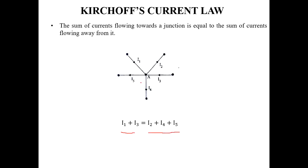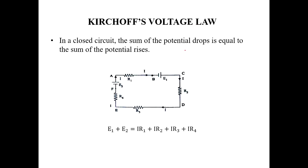Kirchhoff's Voltage Law (KVL): the sum of potential drops equals the sum of potential rises. Potential rises are the supply voltages E1 and E2. Since this is a series circuit, current is the same (I) throughout. The voltage drop across each resistor is I times R, so: E1 plus E2 equals I·R1 plus I·R2 plus I·R3 plus I·R4.